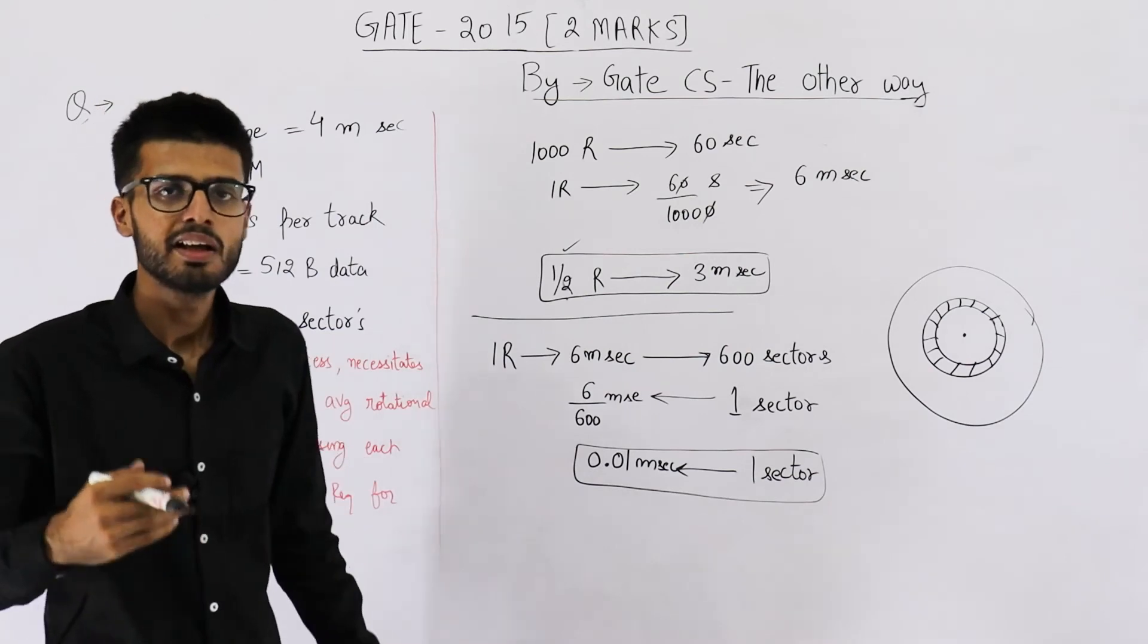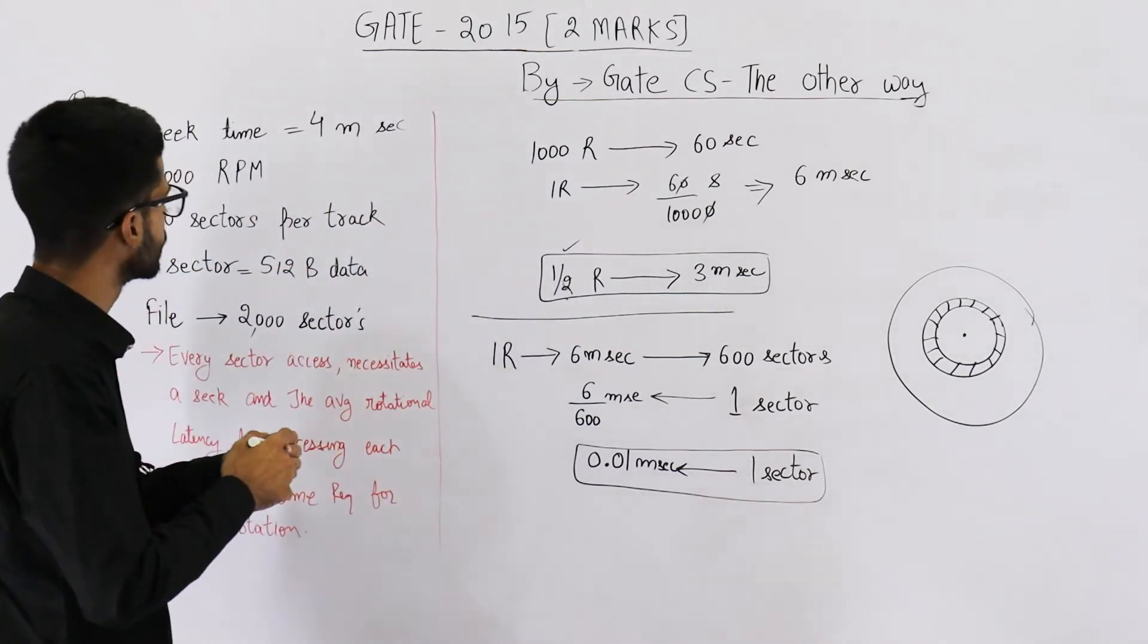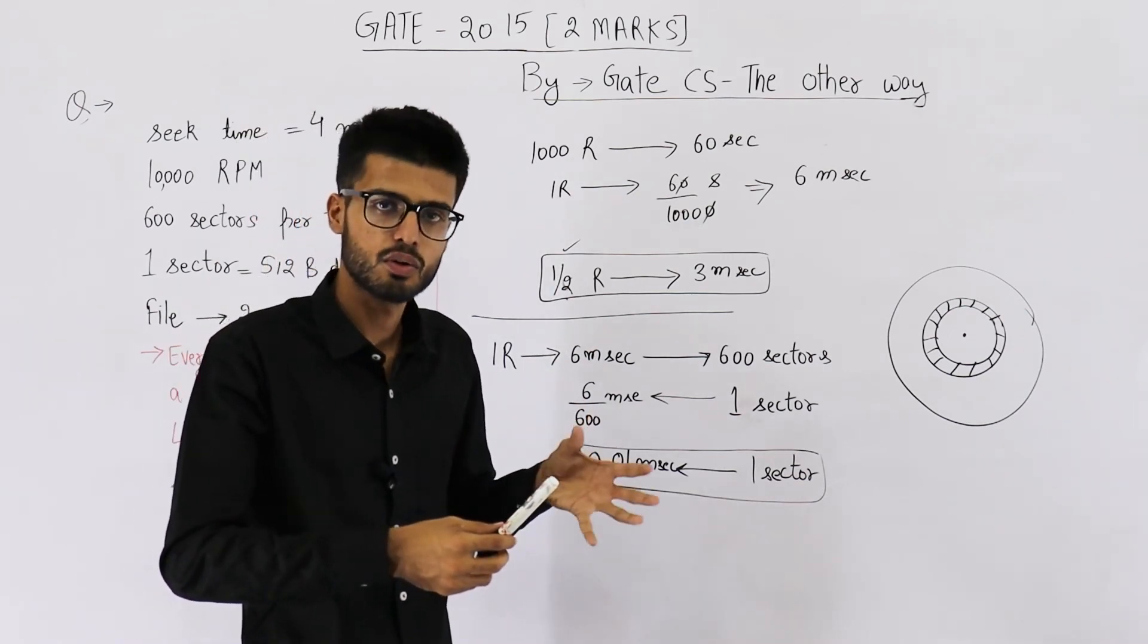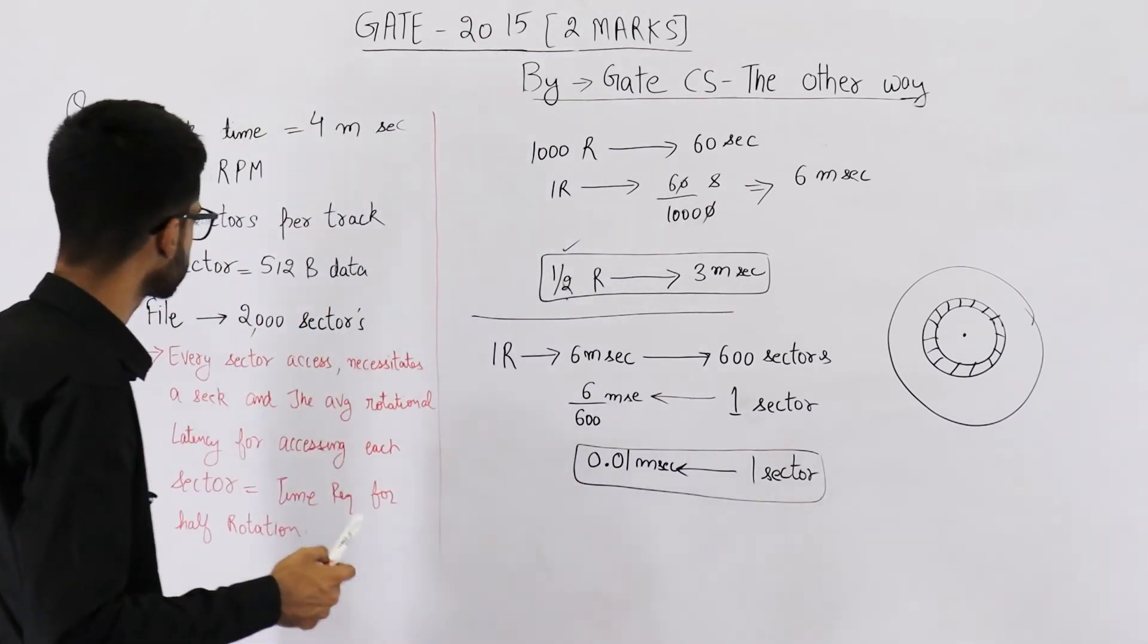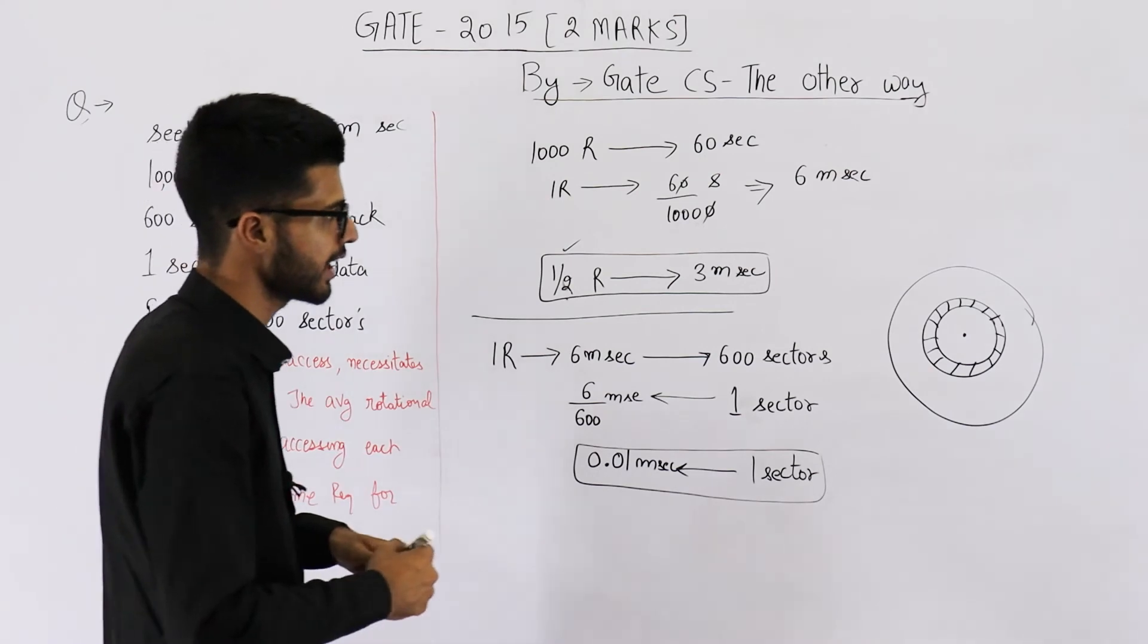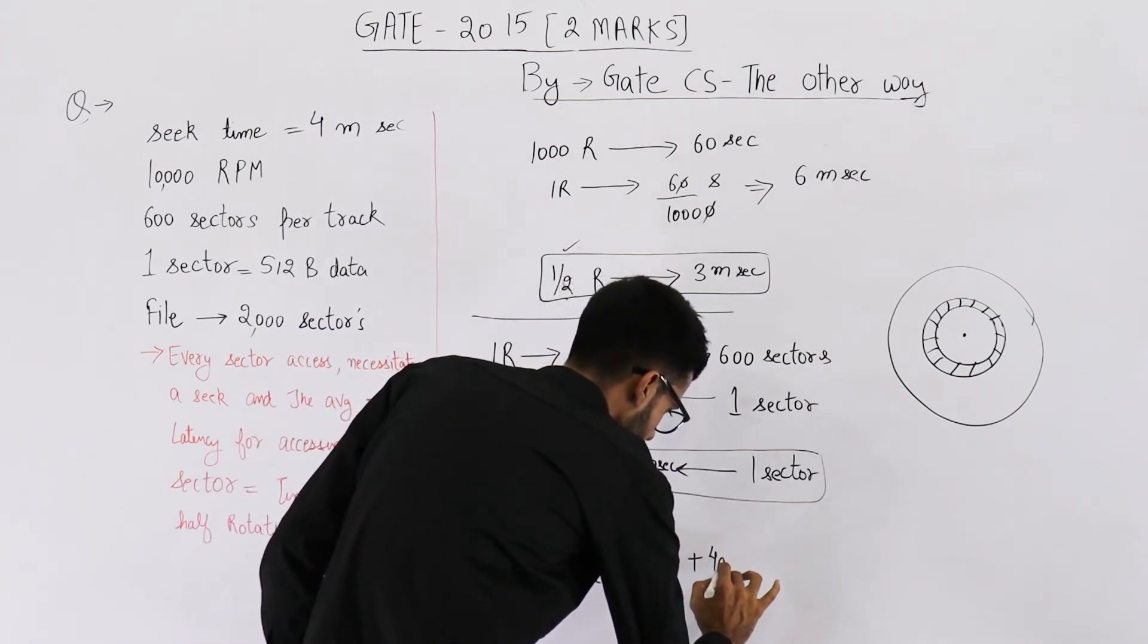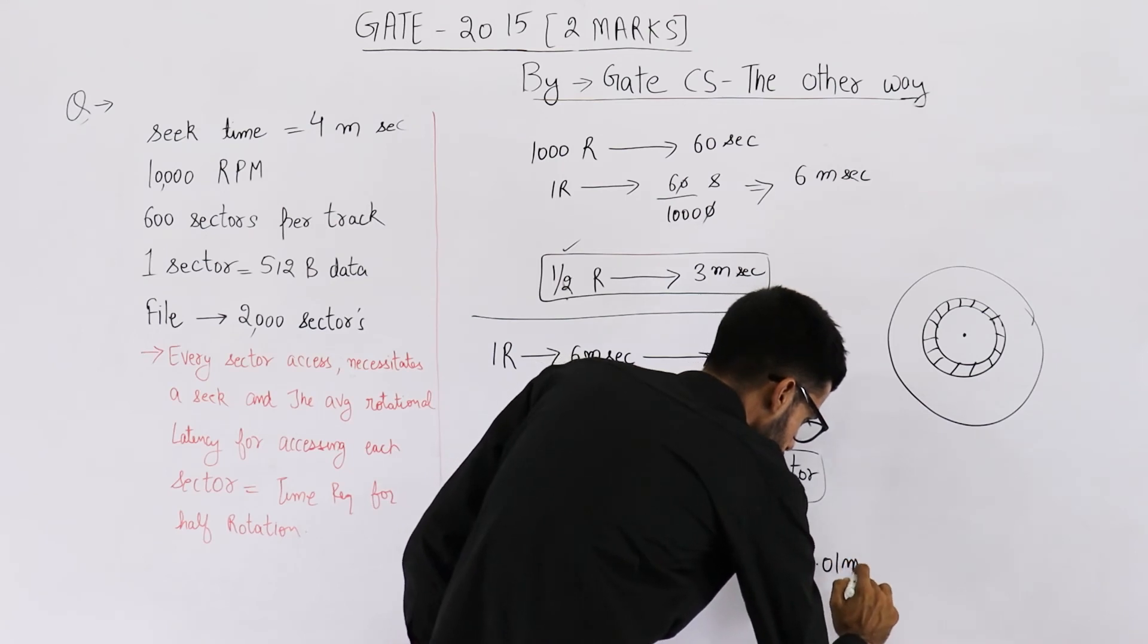So we found out that 0.01 millisecond is required for actual data transfer from one sector. 3 plus 4 is the delay required before starting this transfer. You know that seek time is the time required for bringing head onto that particular track and rotational delay is the delay for rotating the platter, so that one sector out of that track comes to the desired position. After that you spend this much time. All of this process is repeated 2000 times.